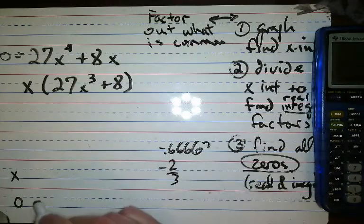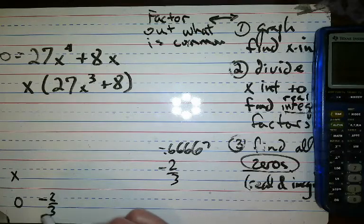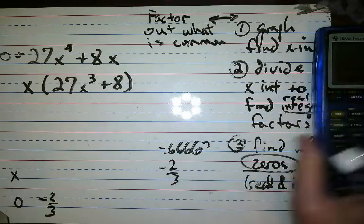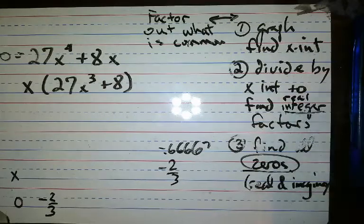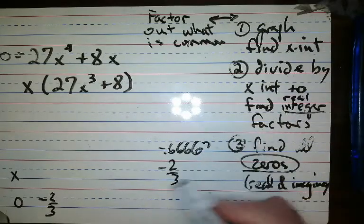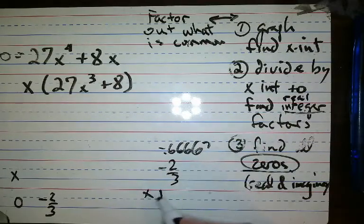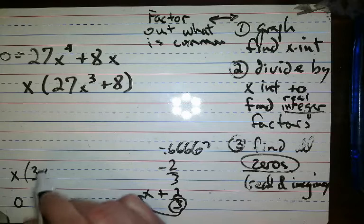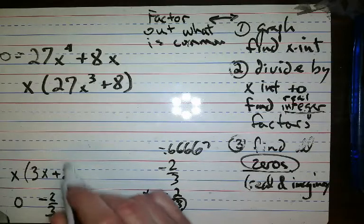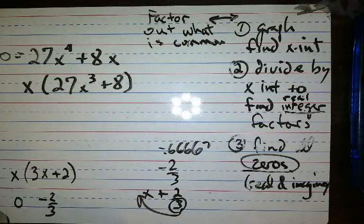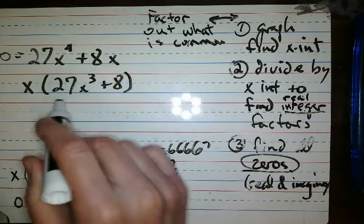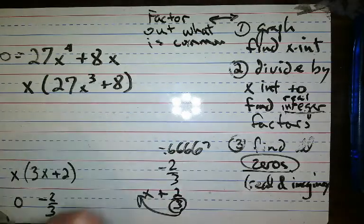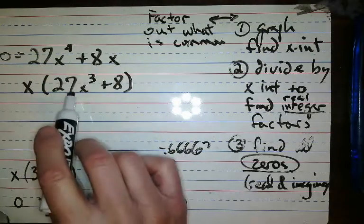Well, if negative two-thirds is an x-intercept, what's the integer factor that goes with that? You know you have to say x plus two-thirds, and then move the denominator up in front. So this would be 3x plus 2. Now I have to divide that into this polynomial.